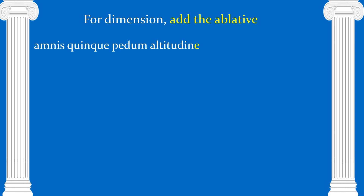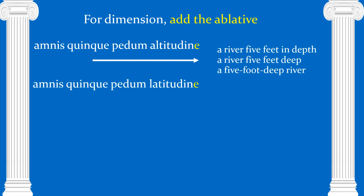For dimension we add the ablative. There are three dimensions that we need to know. Amnis quinque pedum altitudine — amnis is a river, quinque is five, pedum is 'of feet,' and altitudine comes from altitudo meaning depth or height. So we get 'a river five feet in depth,' or 'a river five feet deep.' Amnis quinque pedum latitudine — the yellow -e ending tells us we're looking at the ablative, because these are third declension words.